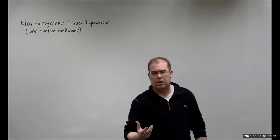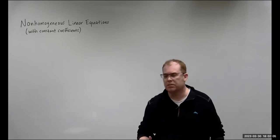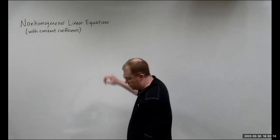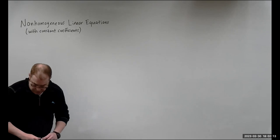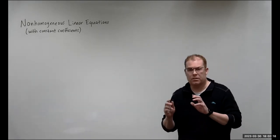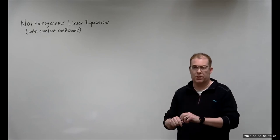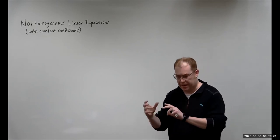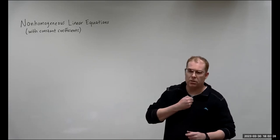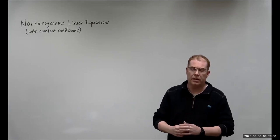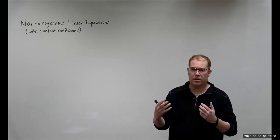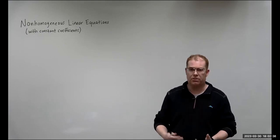In this video, we're going to talk about how to solve non-homogeneous linear equations with constant coefficients. The general idea is that we're going to solve for the homogeneous part first — that is when the right-hand side is zero — and then we're going to use what's called the trial function to solve for the corresponding non-homogeneous part. Once we have those, we add them together, and that gives us our general solution.